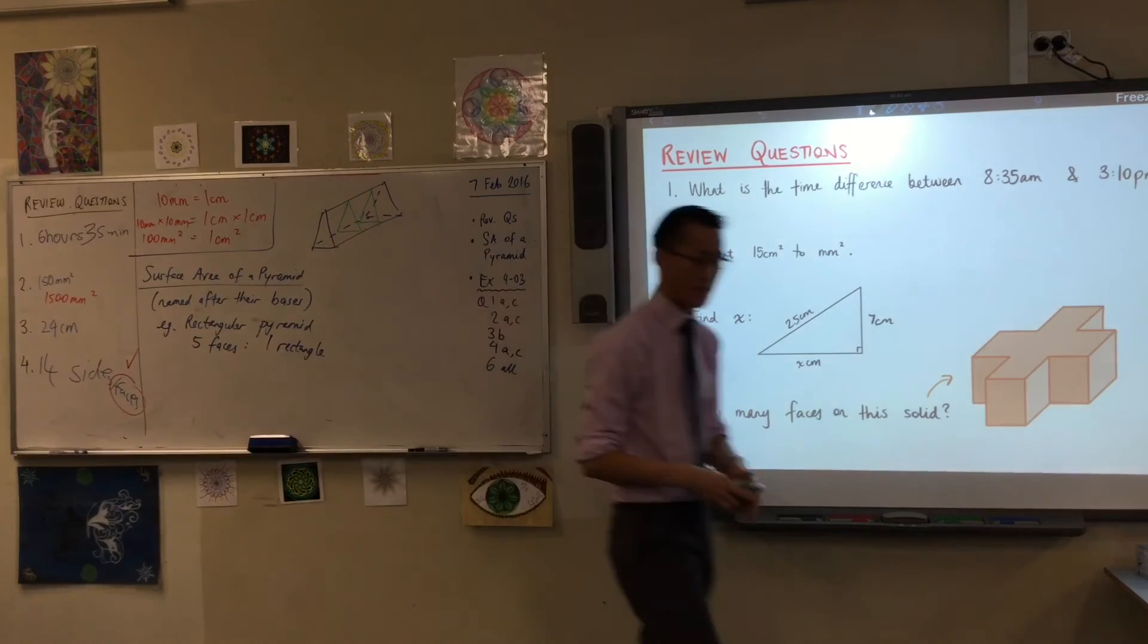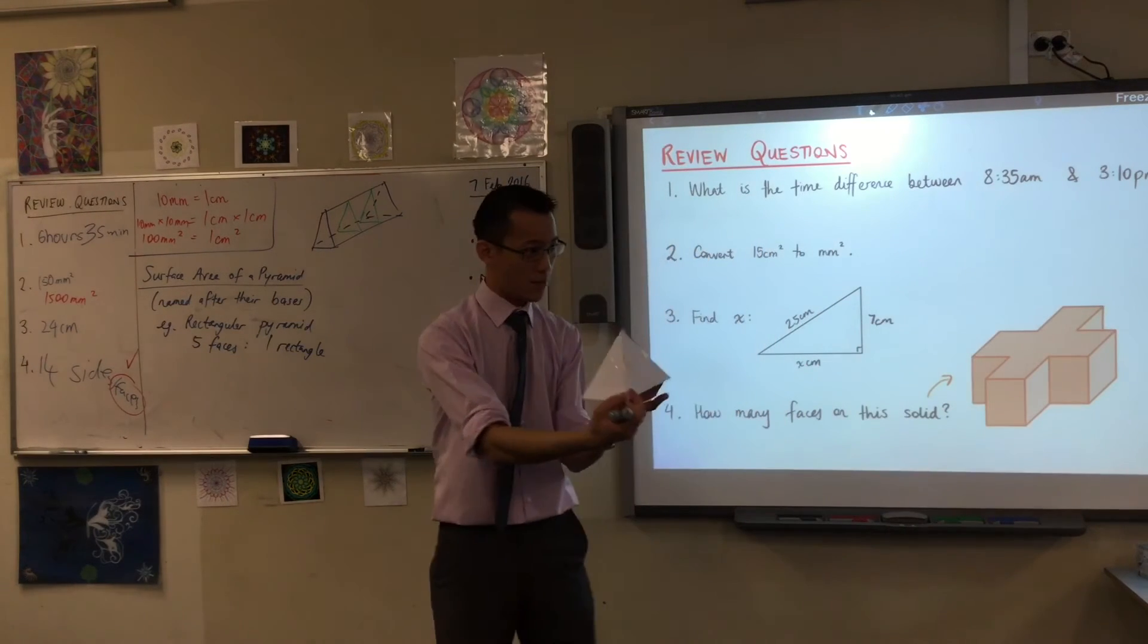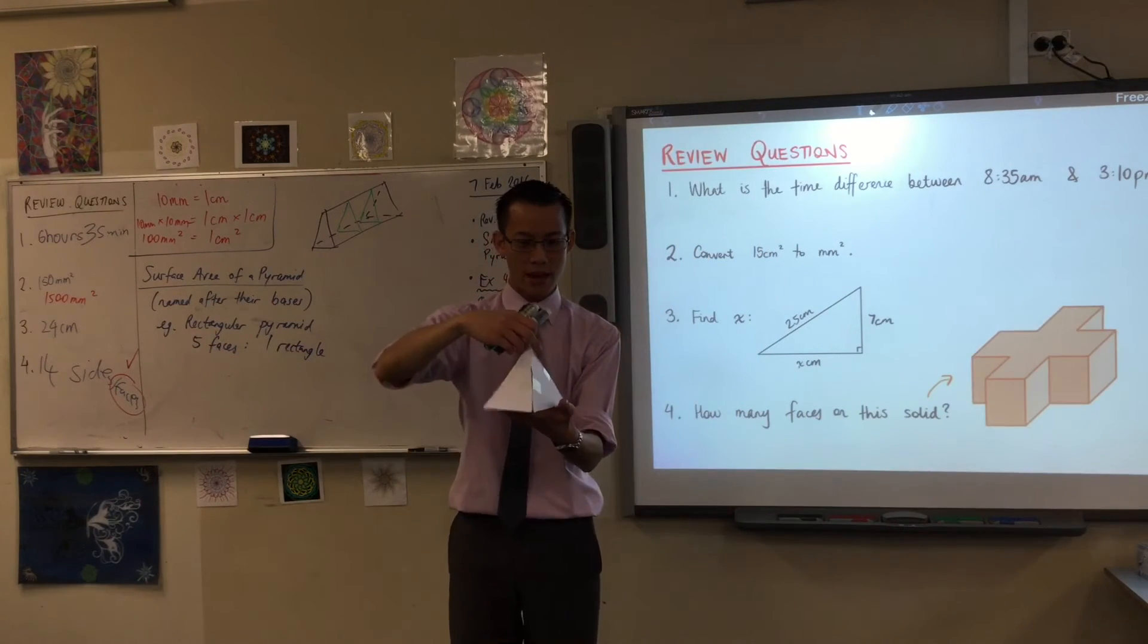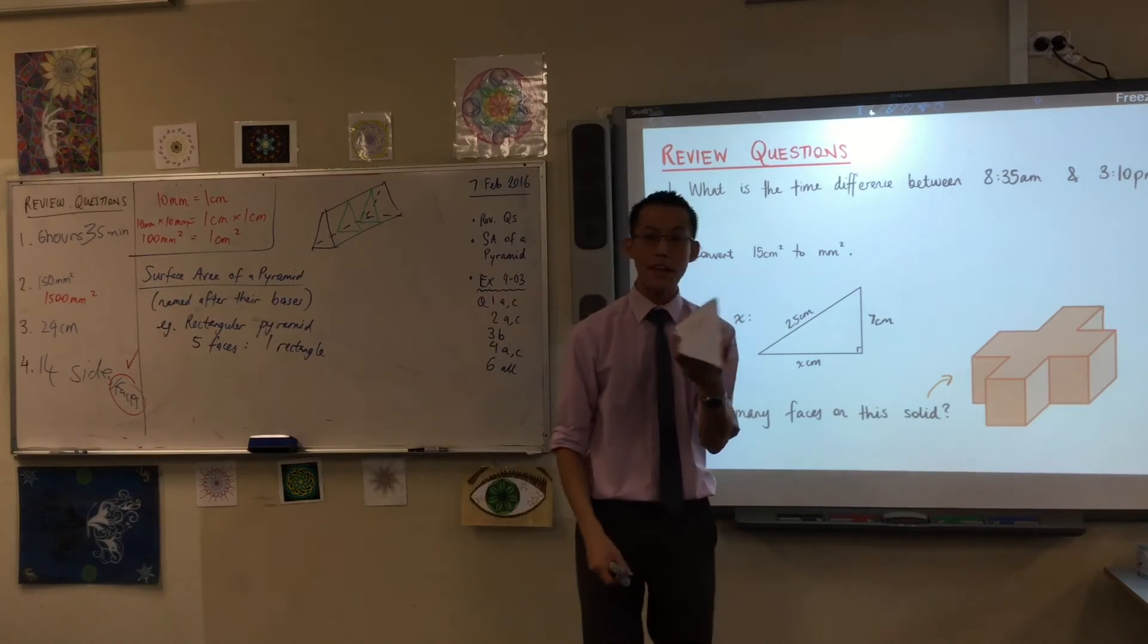Now, you've then got four more faces, since you said there's a total of five. I want you to have a look at them. Can you see them? You can see them on your diagram as well. Are all four of the remaining faces the same?